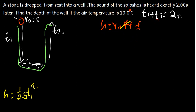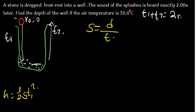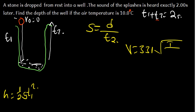When the sound travels back up, the speed equals distance divided by time, where the time is T2. To find that speed, we use the speed of sound in air: V equals 331 times the square root of the temperature divided by 273 Kelvin. We need to convert the temperature to Kelvin.